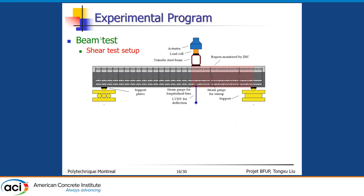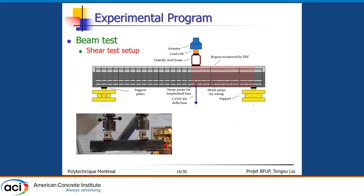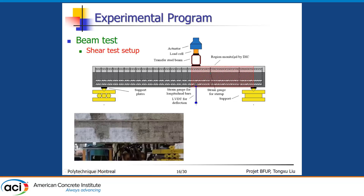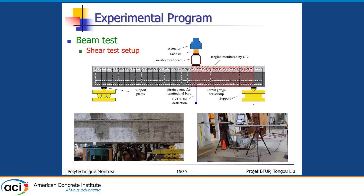We then conducted the beam tests using a three-point bending setup. Steel spreader beams transferred the load to the beam more uniformly. We instrumented with load cells, LVDTs, and strain gauges in both steel rebars and concrete to monitor behavior. We also employed digital image correlation technology, applying black dot patterns and using high-speed cameras to capture deformations of every point in the shear span.